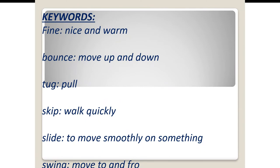Now children, let's see the meanings of different words from the chapter. The first one is 'fine,' which means nice and warm. 'Bounce' means move up and down. 'Tug' means pull. 'Skip' means walk quickly. 'Slide' means to move smoothly on something. 'Swing' means to move to and fro.